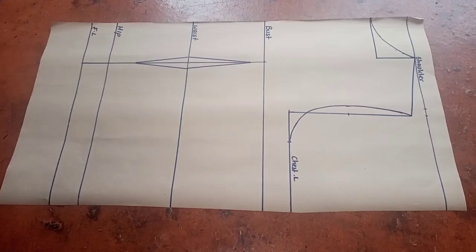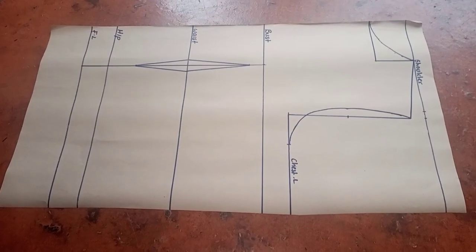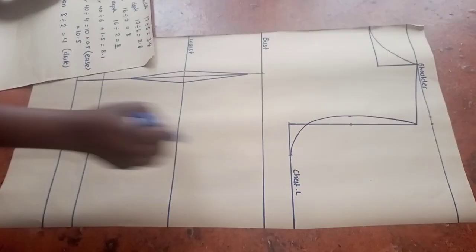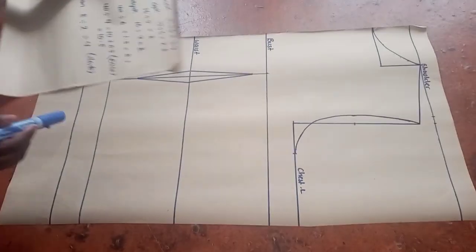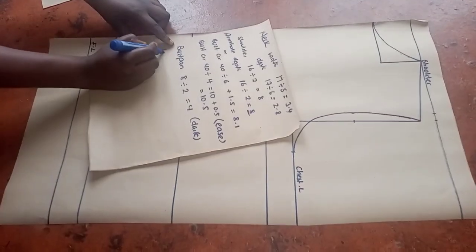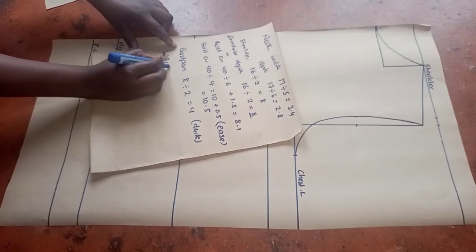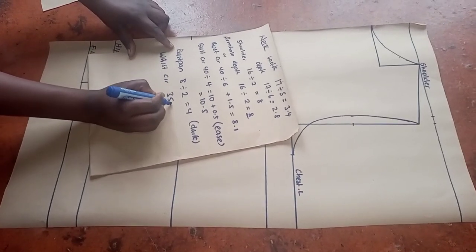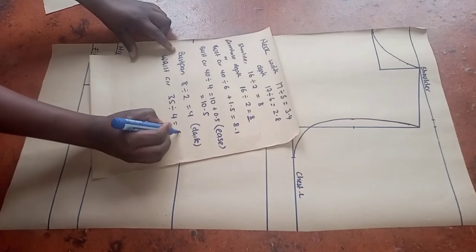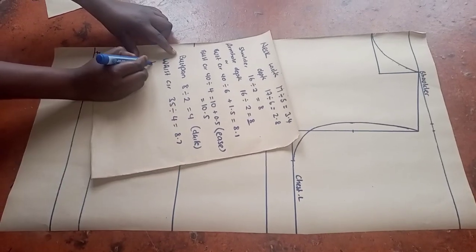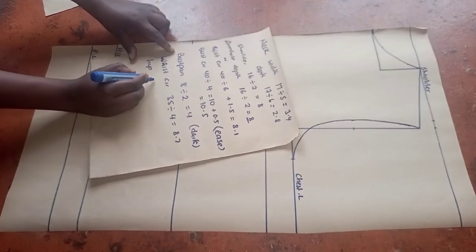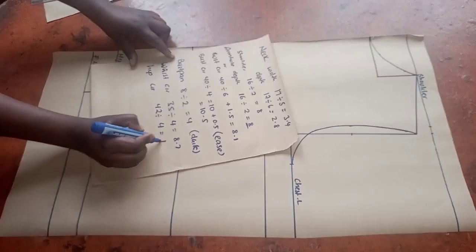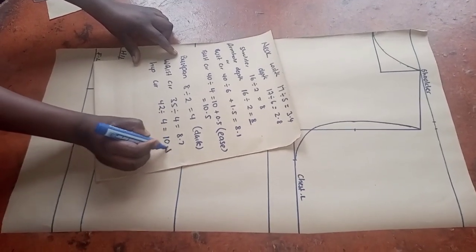So that's our dart. From here I'm just going to fill in the horizontal measurements — that's the waist circumference, which I'm going to divide by 4. The waist circumference was 35 divided by 4, giving me 8.7. The hip circumference was 42 divided by 4, giving me 10.5. And I'm just going to fill that in. We divide by 4 because the body is divided into 4 parts.